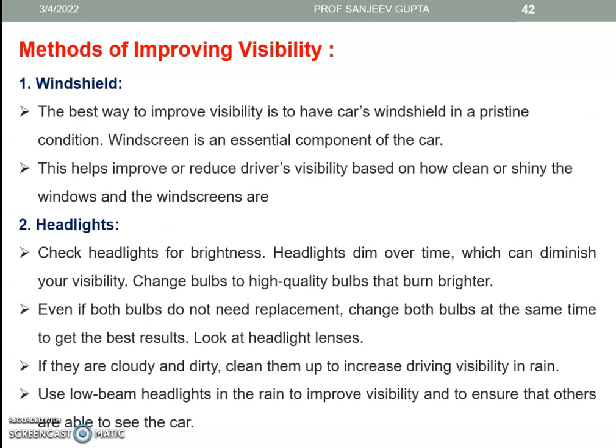There are many methods of improving visibility. Number one — windshield: the best way to improve visibility is to have the car's windshield in pristine condition. The windshield is an essential component of the car and helps improve or reduce driver visibility based on how clean the windscreen is. Number two — headlights: check headlights for brightness, as headlights dim over time, which can diminish visibility. Change bulbs to high-quality bulbs that burn brighter. Even if both bulbs do not need replacement, change both at the same time to get the best results. Look at headlight lenses — if they are cloudy or dirty, clean them up.